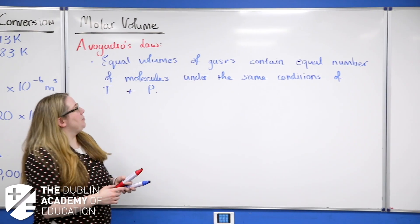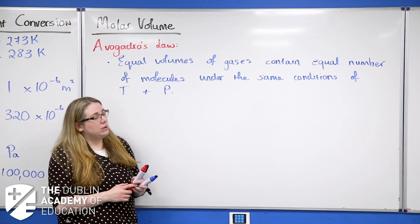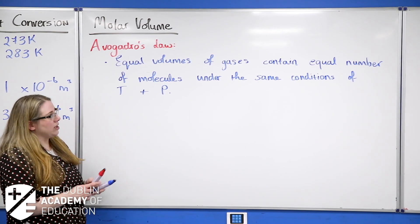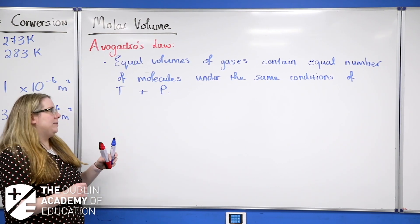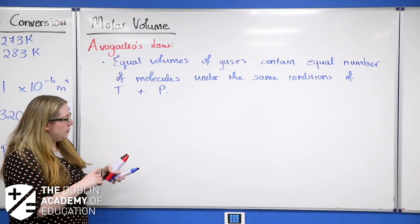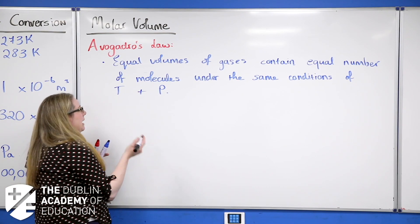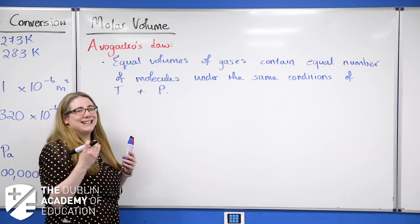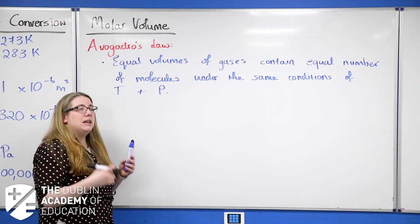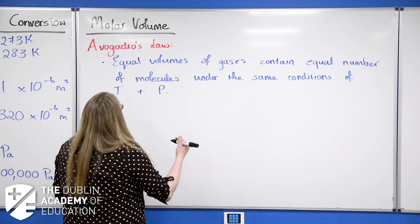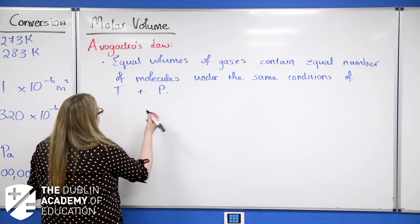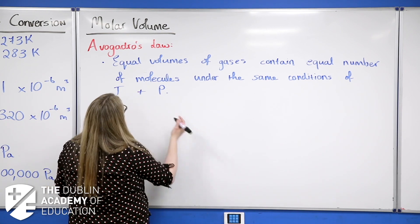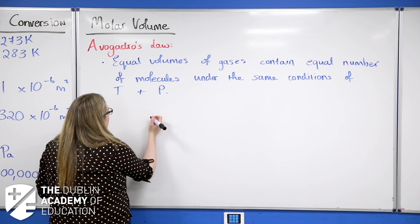Equal volumes of gas contain equal numbers of molecules under the same conditions of temperature and pressure. That's where the molar volume comes in: at the same conditions of temperature and pressure, regardless of what the gas is, that number of moles is going to have the same number of molecules, and that volume is going to have the same number of moles.